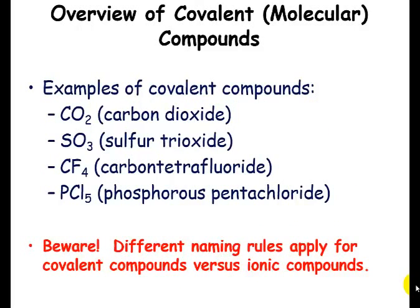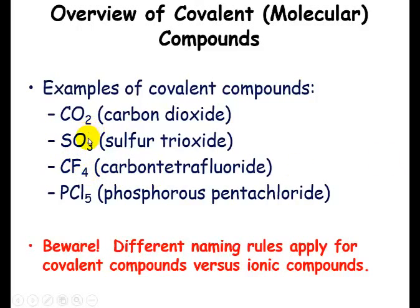Let's look at a few examples of covalent compounds. If you're not careful, you might think CO₂ is a polyatomic, but look — no charge, overall neutral compound. This is carbon dioxide, two nonmetals bonded together, not a polyatomic ion. Same thing goes for sulfur trioxide — you might think it's a polyatomic ion, but it's an overall neutral compound with no charge. Sulfur is a nonmetal, oxygen is a nonmetal, so it's a covalent compound where electrons are shared.